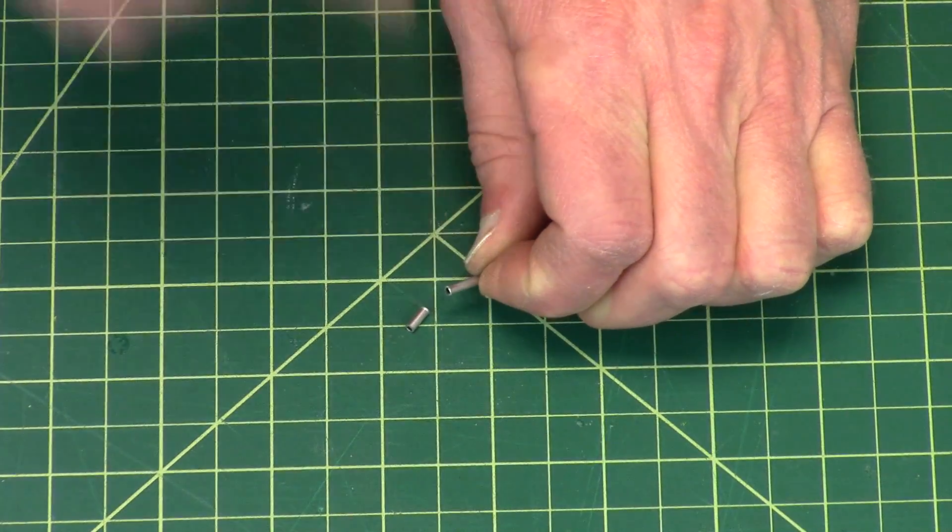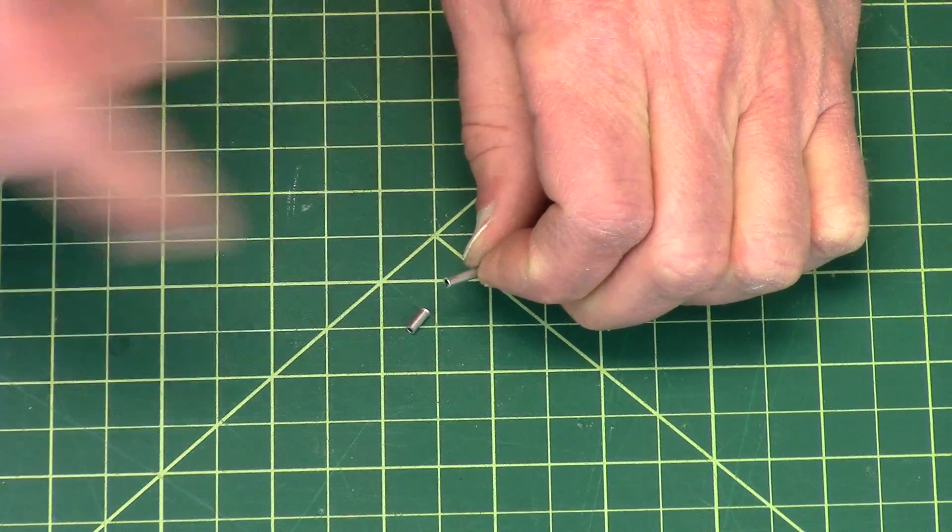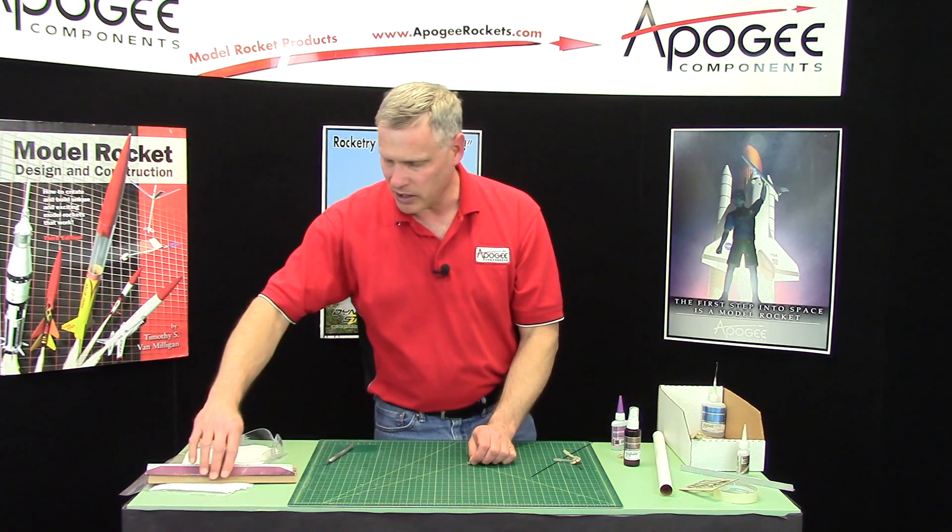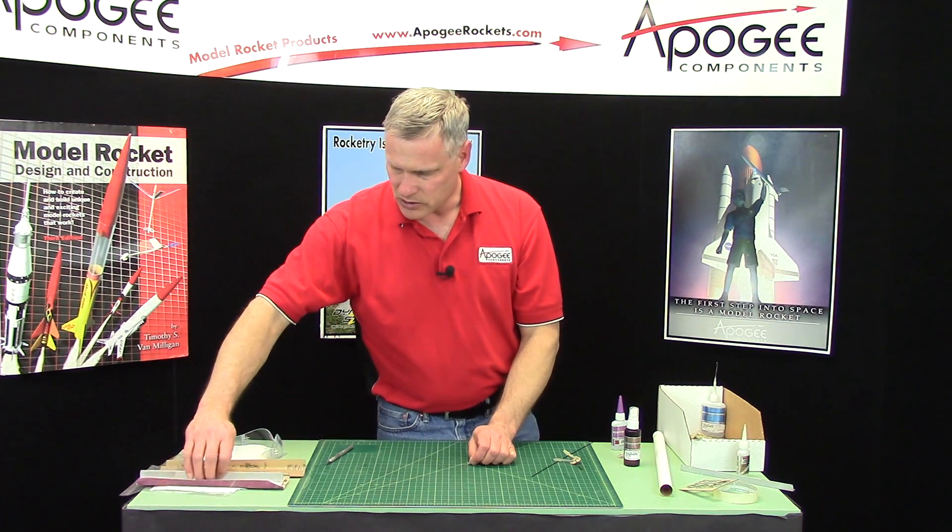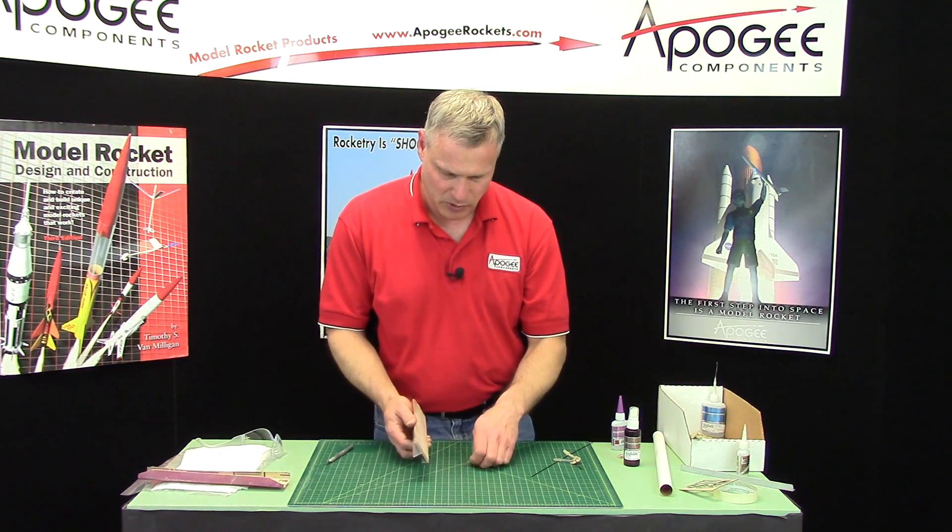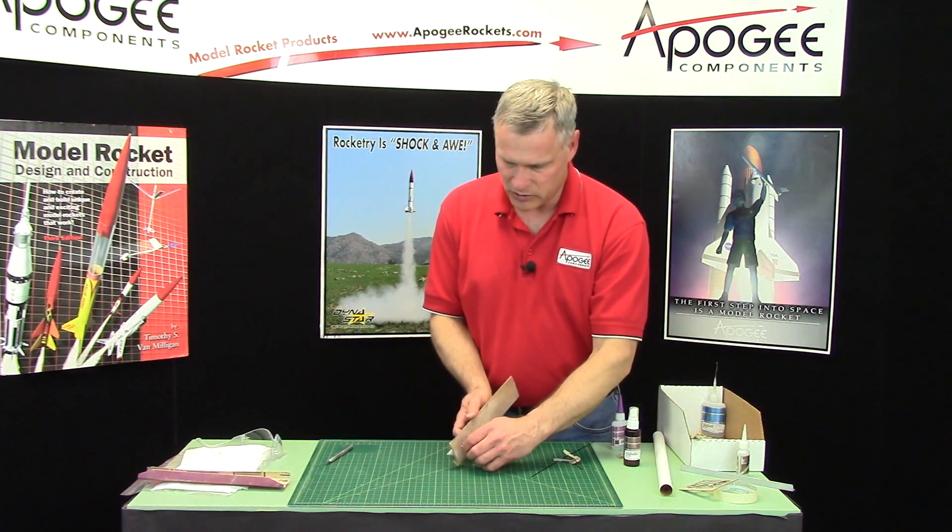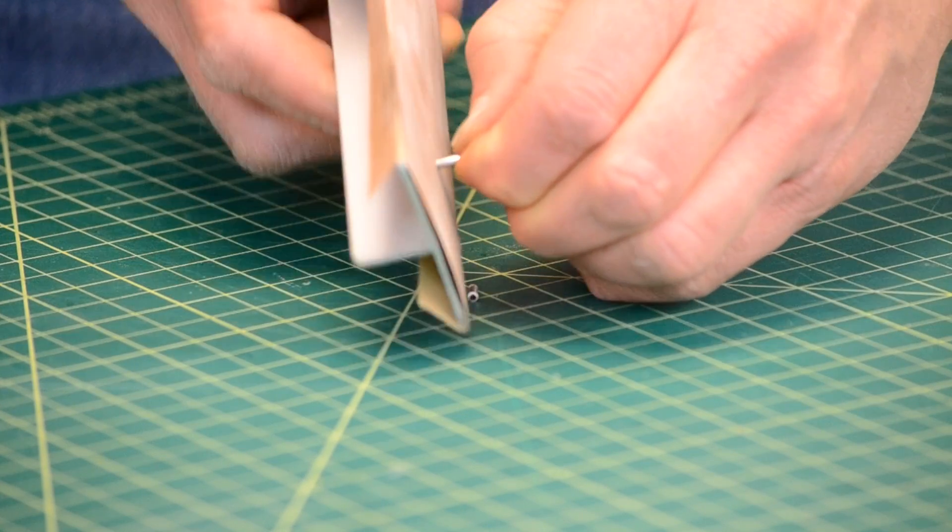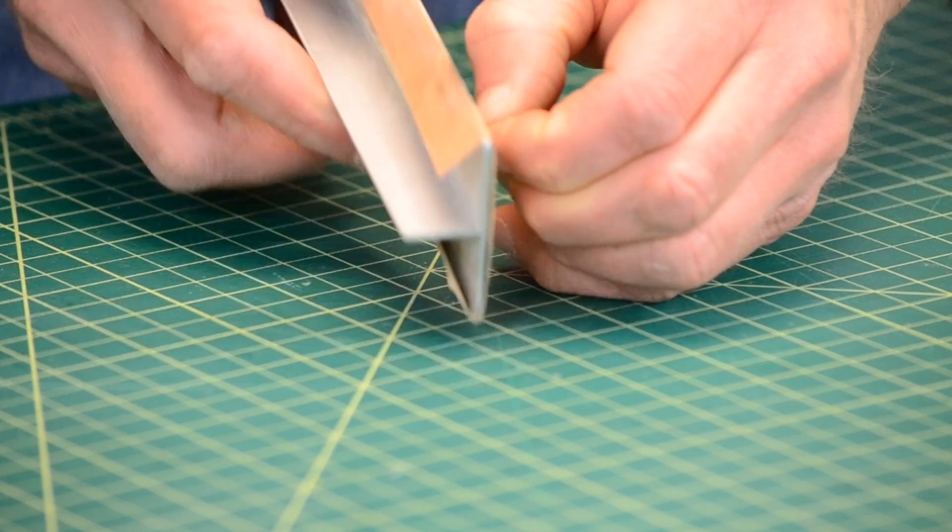Now this end I can see is a little bit rough. Now these ends we want to have nice and smooth, so I'm going to take some sandpaper, and this is some fine grit sandpaper, and I just want to sand that so I get nice and smooth.